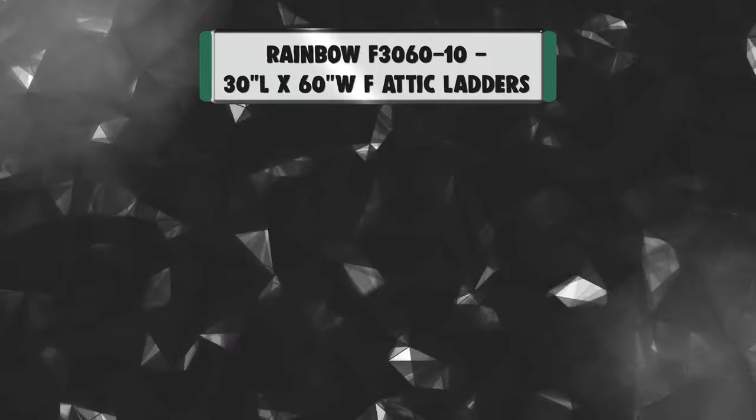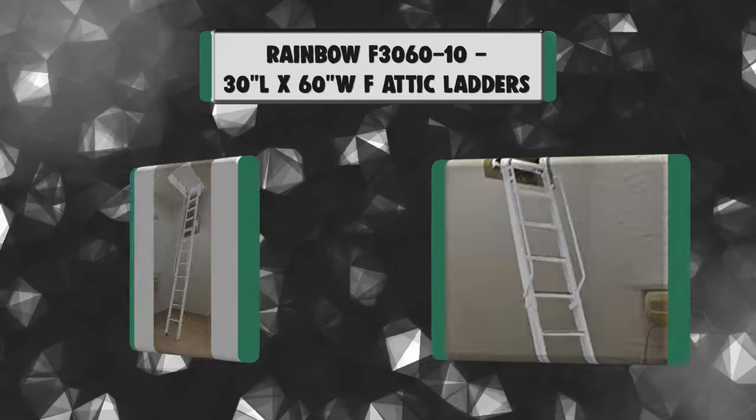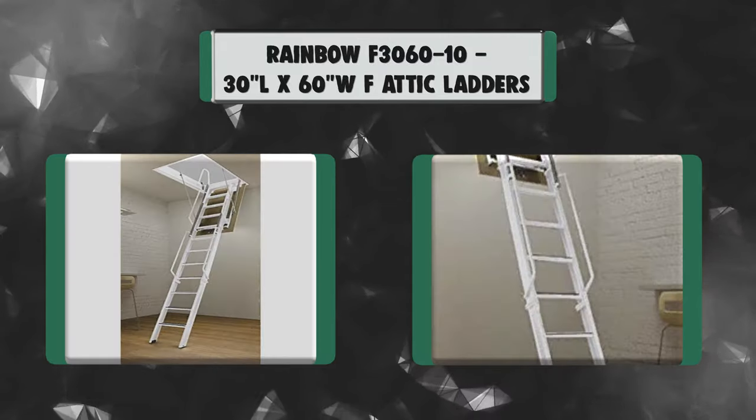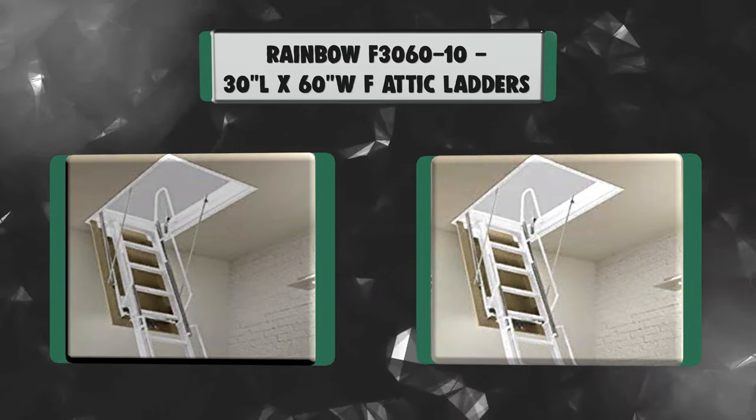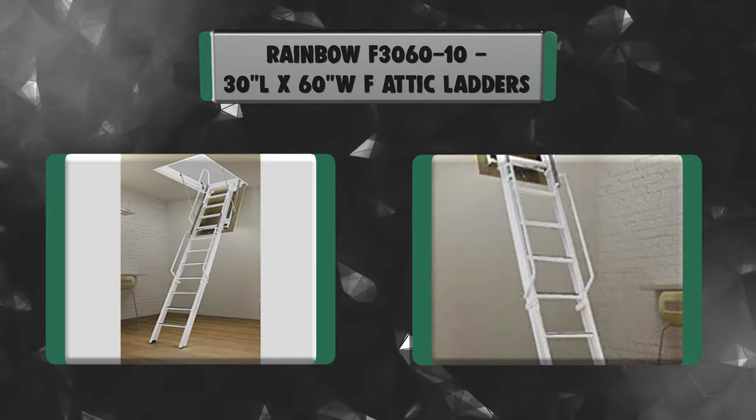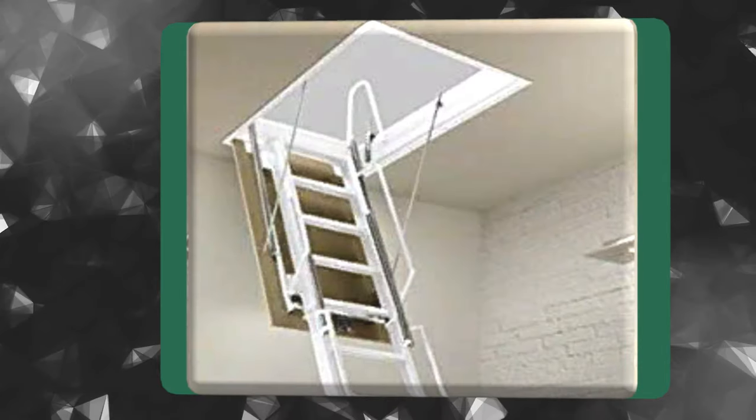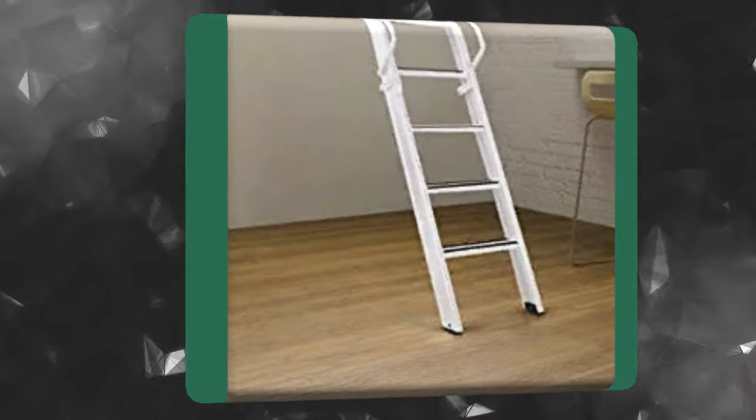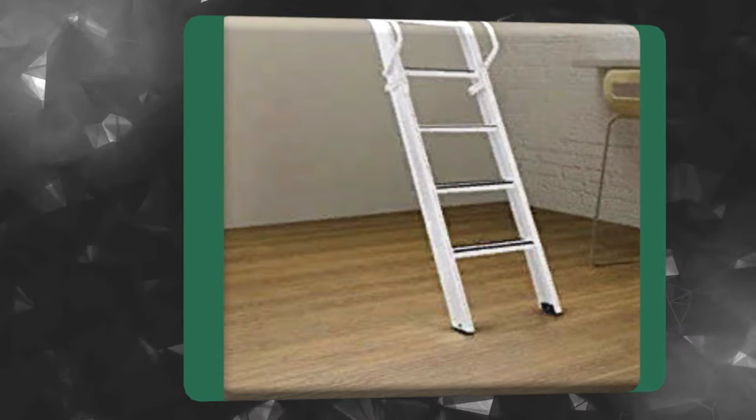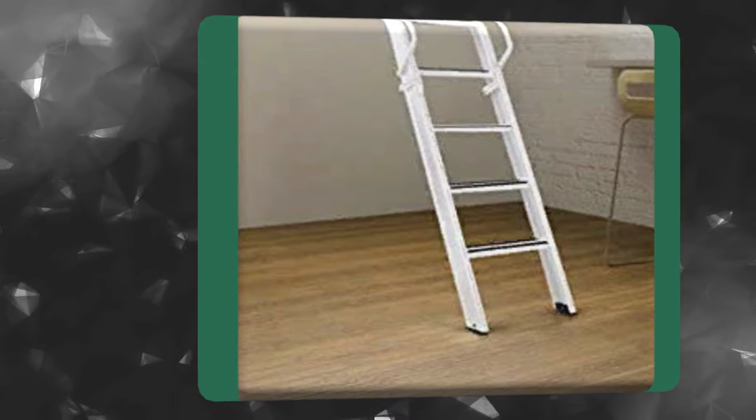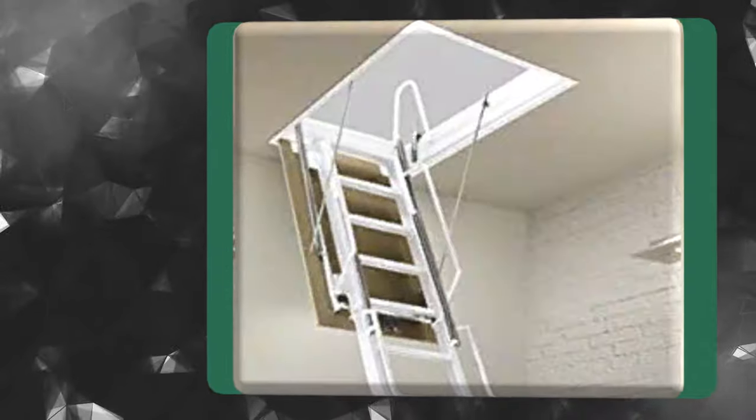Number 7. Rainbow F3060-10 30L x 60W F attic ladders. The Rainbow F2260-12 is crafted with safety in mind, offering handrails at the sides and the top, as well as locking latches between the sections. It's made of powder-coated steel and has a high weight bearing capacity of 570 pounds. It is Rainbow's tallest ladder series for residential or commercial use.